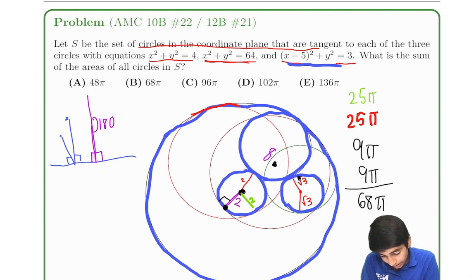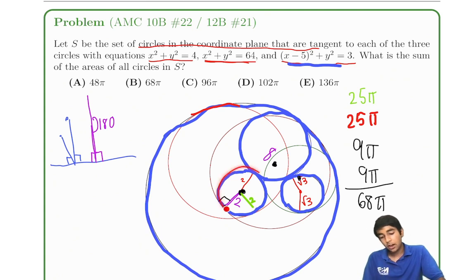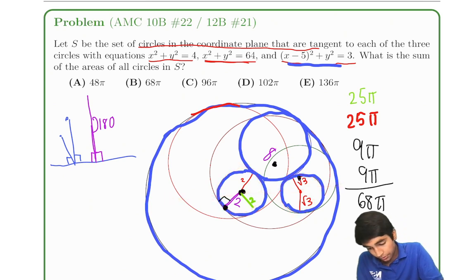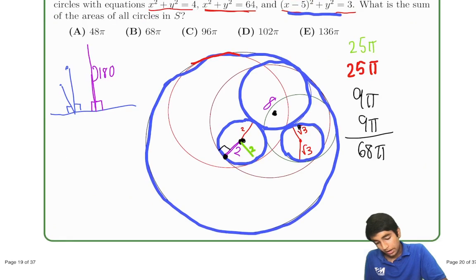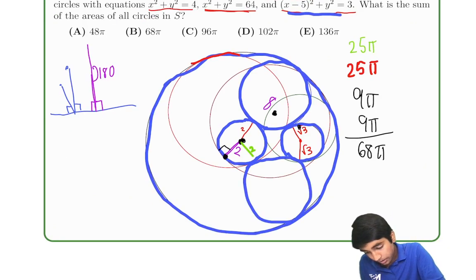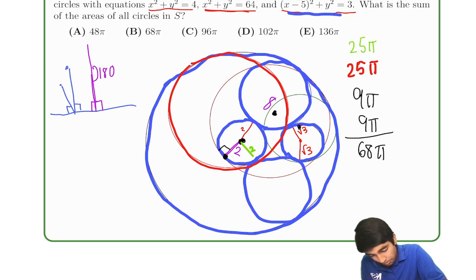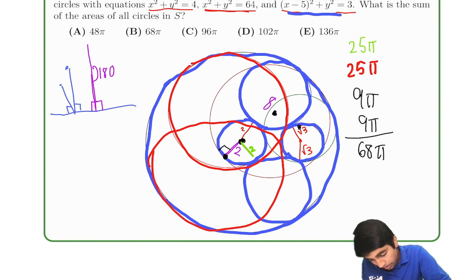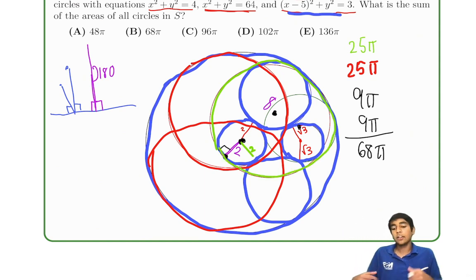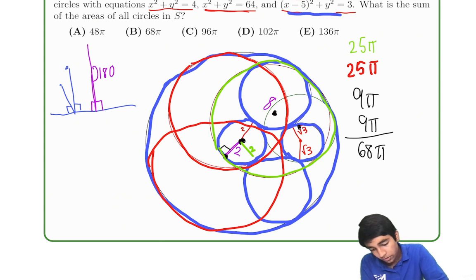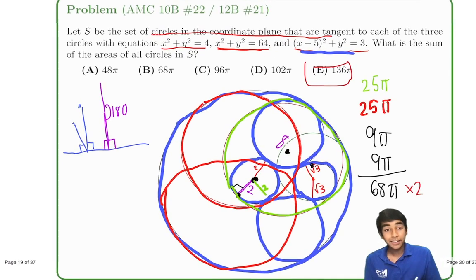But wait — these circles are symmetric around the x-axis. So for each of the circles we drew, we can draw the same circle reflected in the opposite orientation. That applies to the blue, red, and green circles. So we multiply 68π by 2 to get 136π as the final answer. Really cool problem!